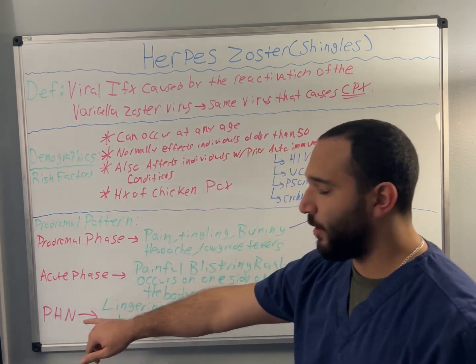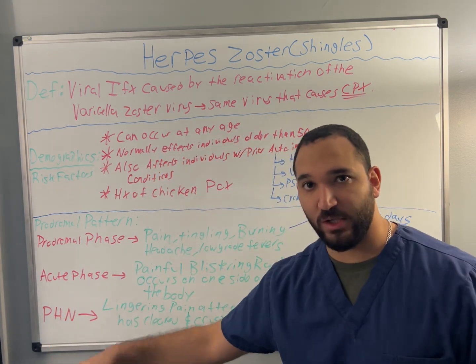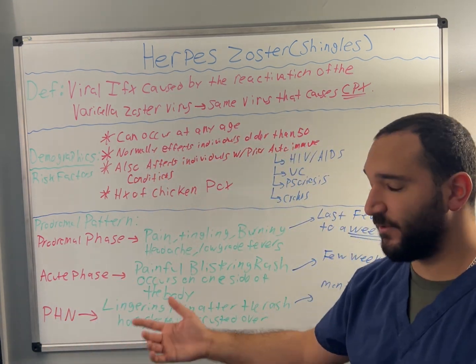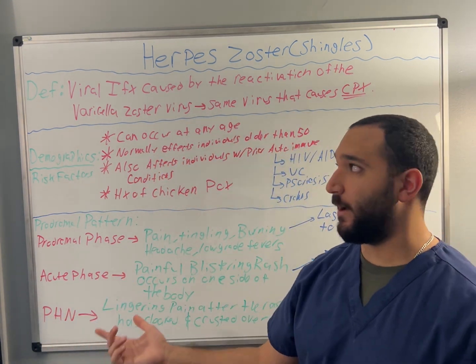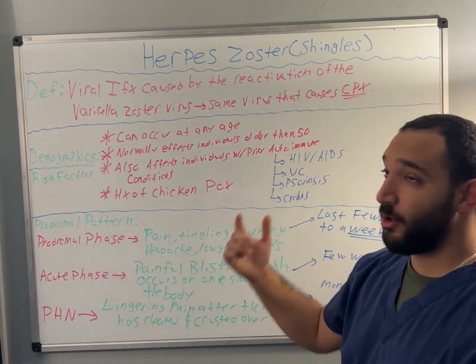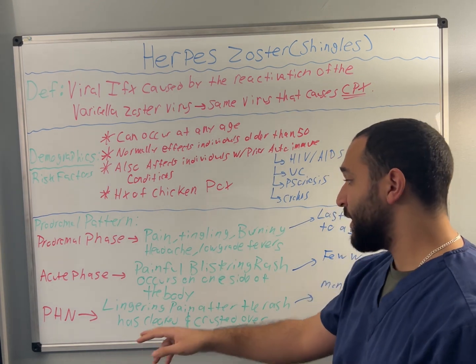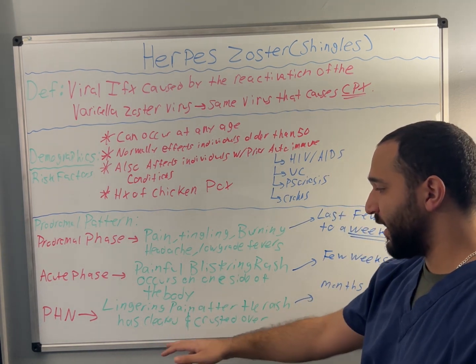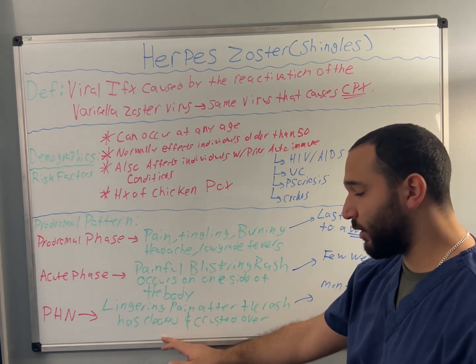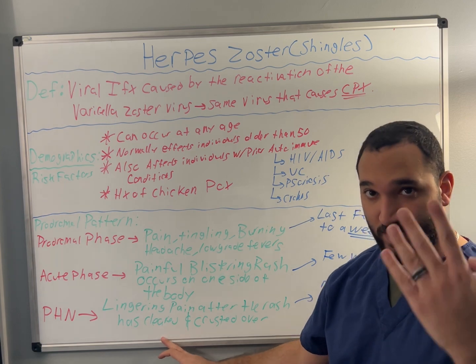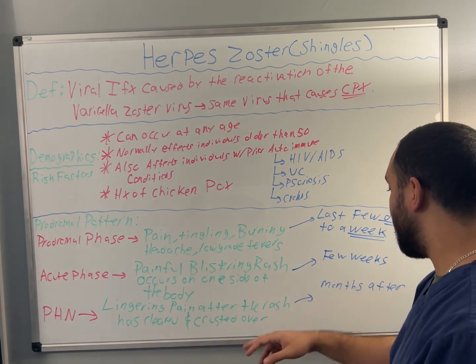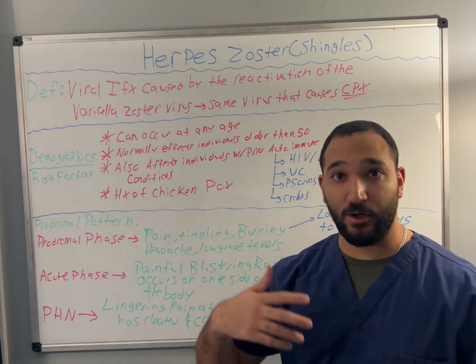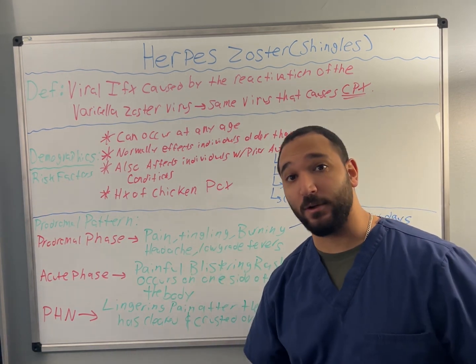Post-herpetic neuralgia is another phase of herpes zoster. It includes lingering pain after the rash has cleared and crusted over, and this can occur months after the acute phase.